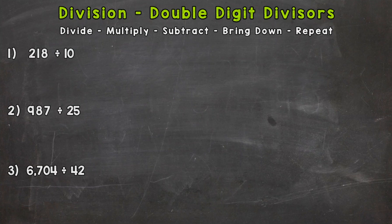So the steps are listed across the top of your screen for you to use as reference: divide, multiply, subtract, bring down, and repeat. So you should see three problems on your screen.